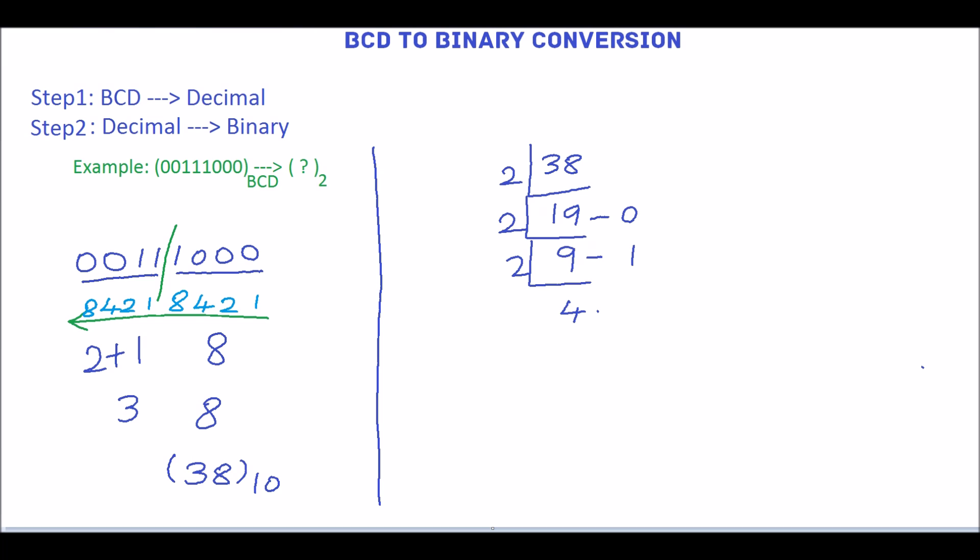Divide this 4 by 2, the quotient is 2 and the remainder is 0. Again divide this 2 by 2, the quotient is 1 and the remainder is 0.